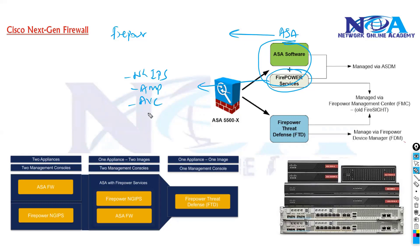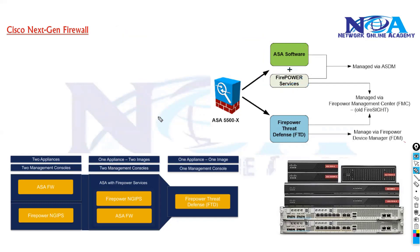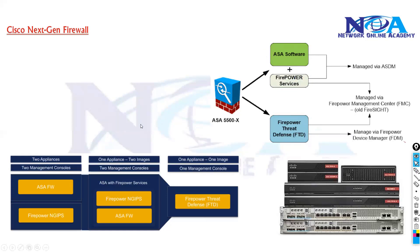Application visibility and control, URL filtering, and application control — all these features can be combined. You can combine them by using an ASA along with Firepower Services, and when you combine these two, in today's network we call this FTD, the Firepower Threat Defense. That's the product name we use.